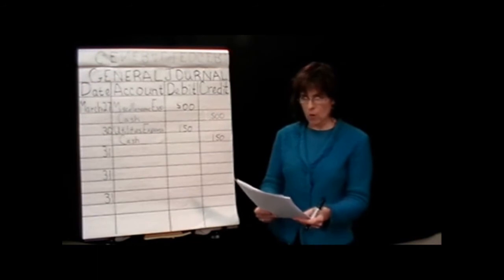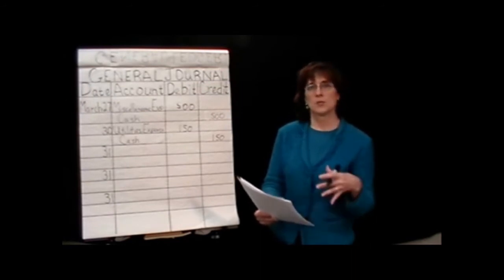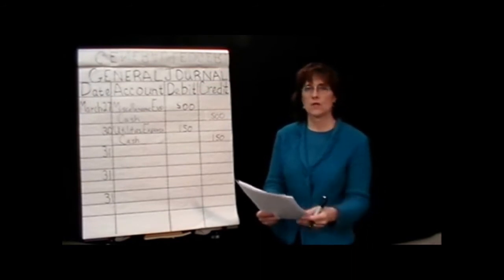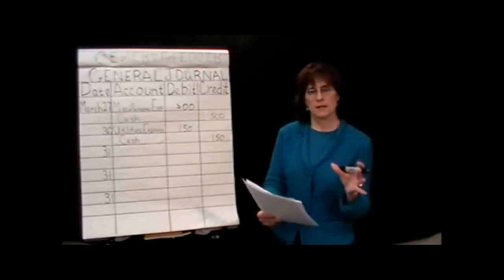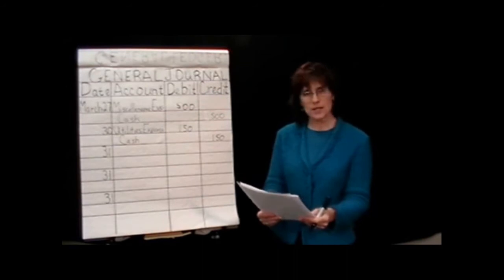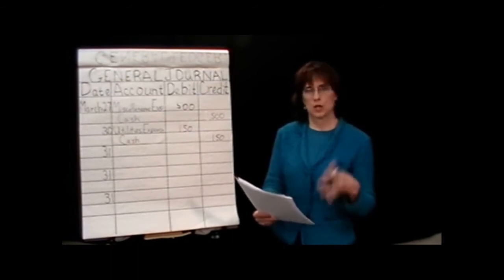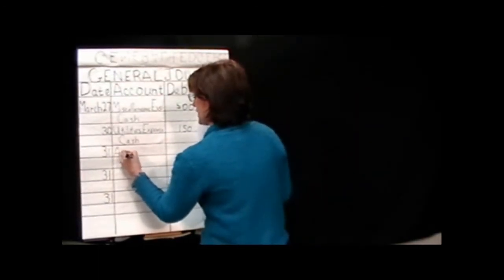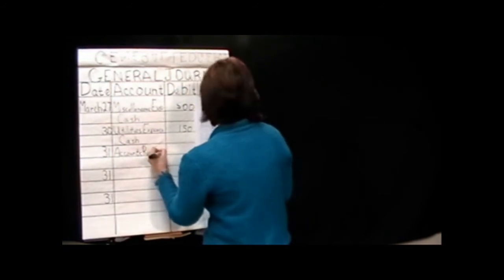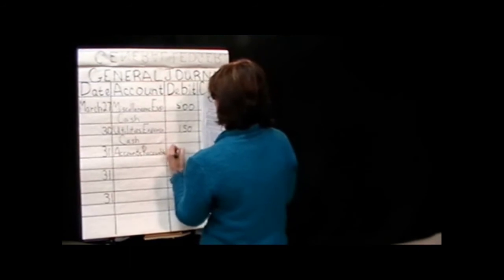But in accounting, we record our revenues when they're earned, not necessarily when we receive the cash. So we've earned these revenues. We've provided the service. We're billing our customers. Our customers owe us. So when our customers owe us, that means that we performed that service on account. And since it's for our customers, it's either going to be accounts receivable or accounts payable. Now, this is a customer that's going to have to pay us in the future, so it would be accounts receivable. Accounts receivable are assets. So when we're billing our customers, we're increasing what they owe, which means we will be increasing our asset accounts receivable. And increases in assets are recorded by debits. So I'm going to debit accounts receivable for $24,800.